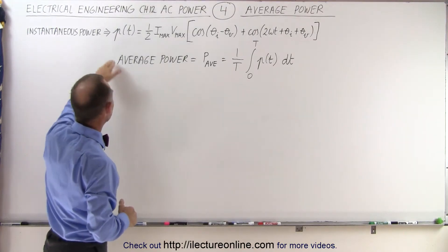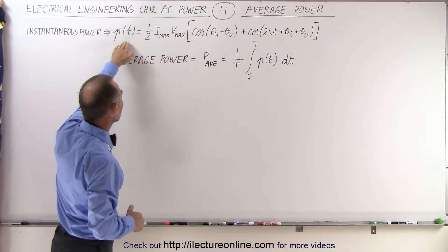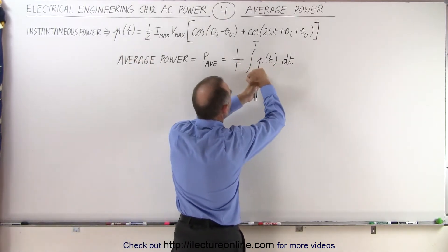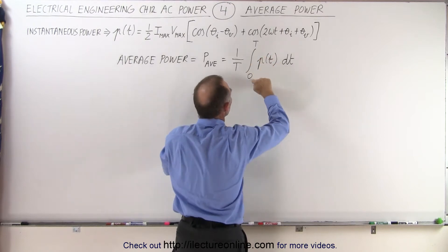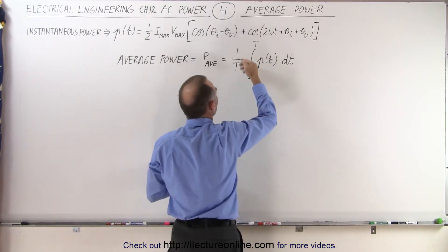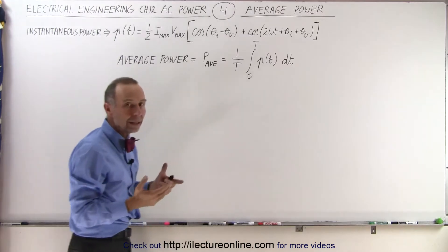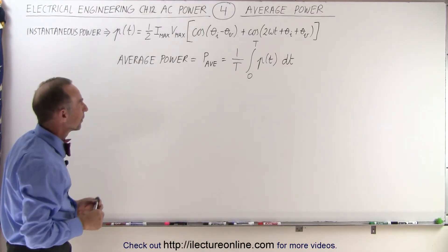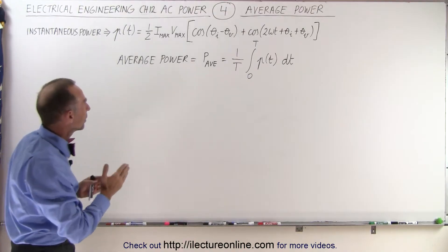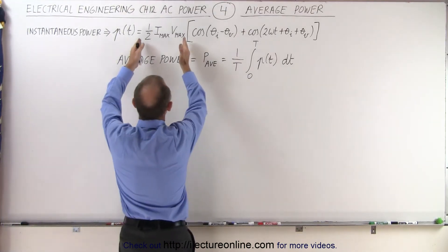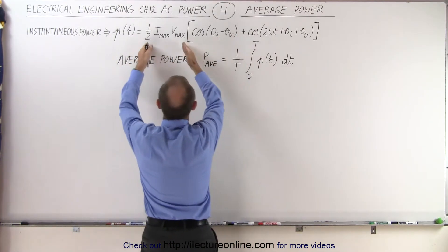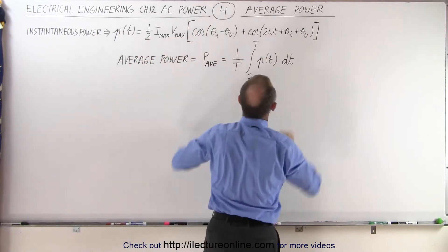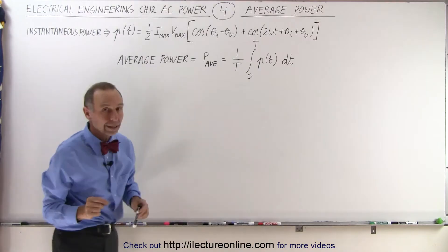For reference we keep in the equation for the instantaneous power. What we're going to do now is take the instantaneous power and integrate it from 0 to t over a period, then divide by t (or multiply by 1 over t) to get the average value. We're going to separate it into two integrals because when we multiply the constant parts together we get a constant, and multiplying the remaining parts gives us the time-varying portion that we'll have to integrate.